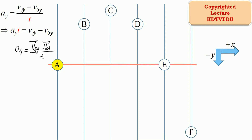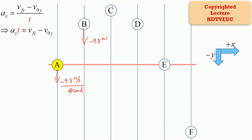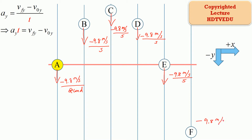Remember, these are all velocities — acceleration is change of velocity divided by time. The acceleration along the vertical is negative 9.8 meters per second per second at every point: at point A, at point B, at point C, at point D, at point E, and at point F — always negative 9.8 meters per second per second.